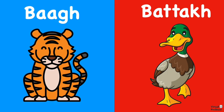Baag and batak are both masculine nouns and singular. Therefore, we used pehla, dusara, tisara, and chota in the sentences we just practiced: Mujhe pehla baag chayyeh. Mujhe dusara batak chayyeh. Mujhe tisara baag chayyeh. Mujhe chota batak chayyeh.